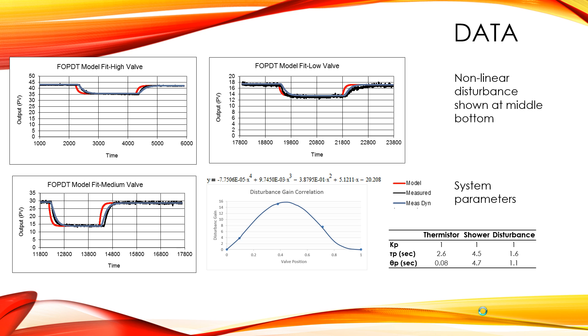Here's some of our data that we collected. This shows the disturbance of our sink on the shower temperature. As you can see it's non-linear, so we had to fit it to a graph. It was dependent on where our valve position was. The graph here in the middle shows that.